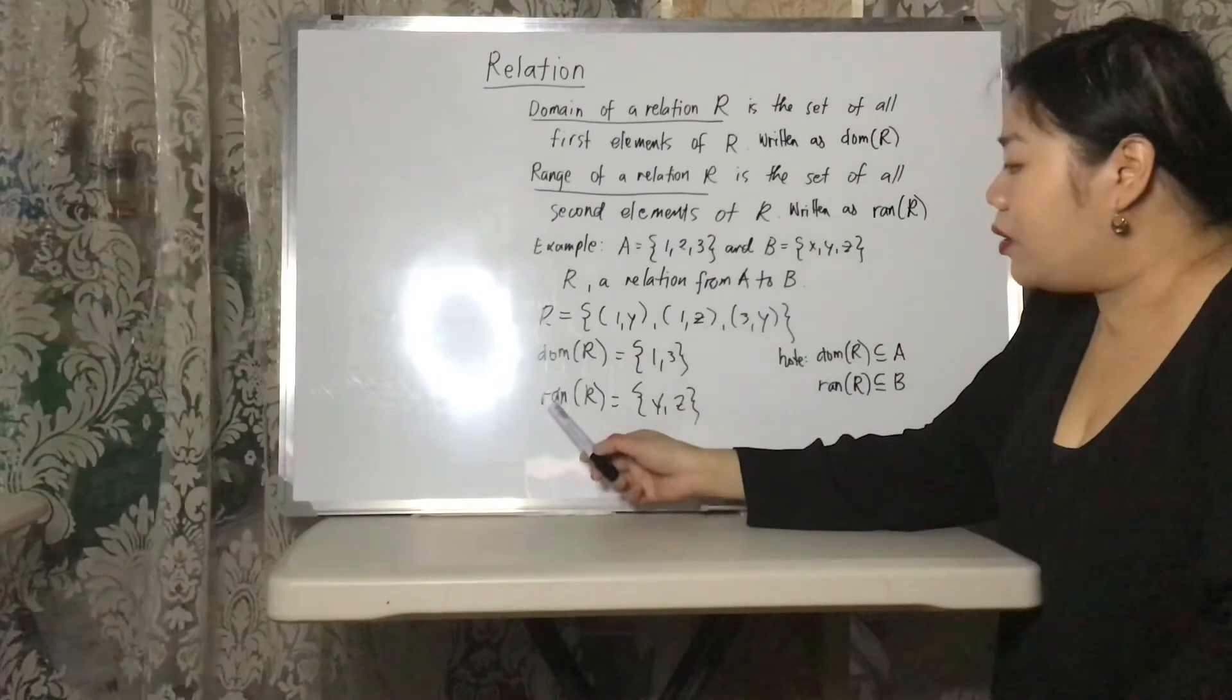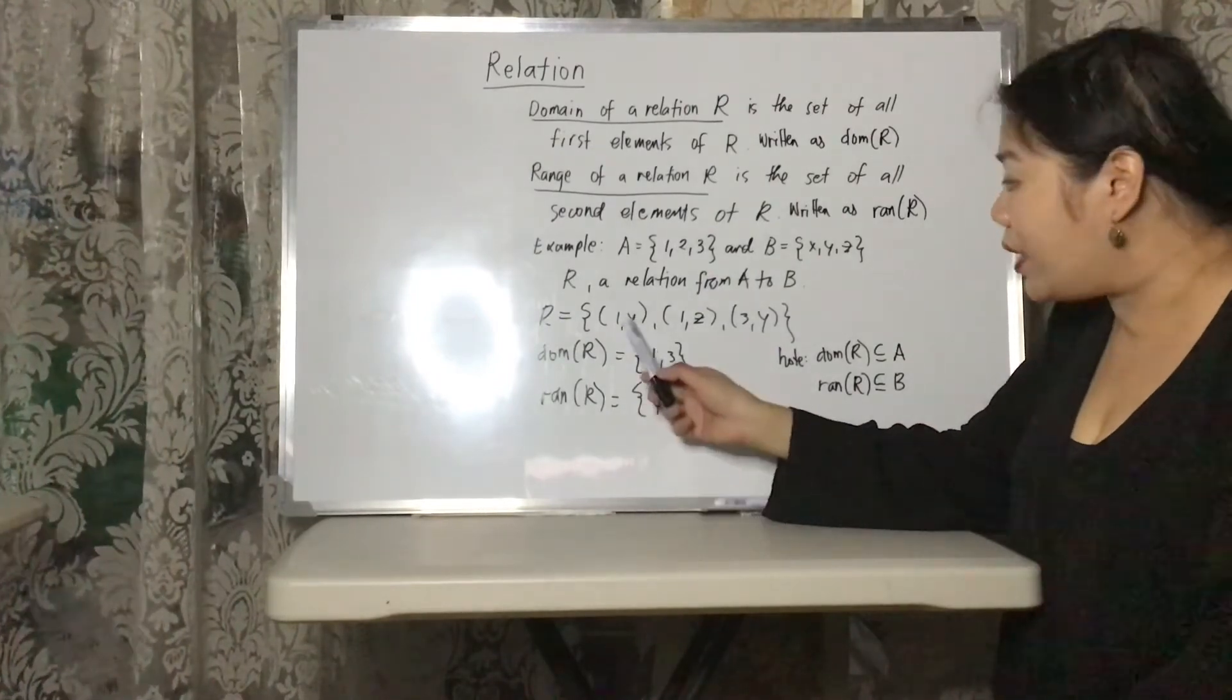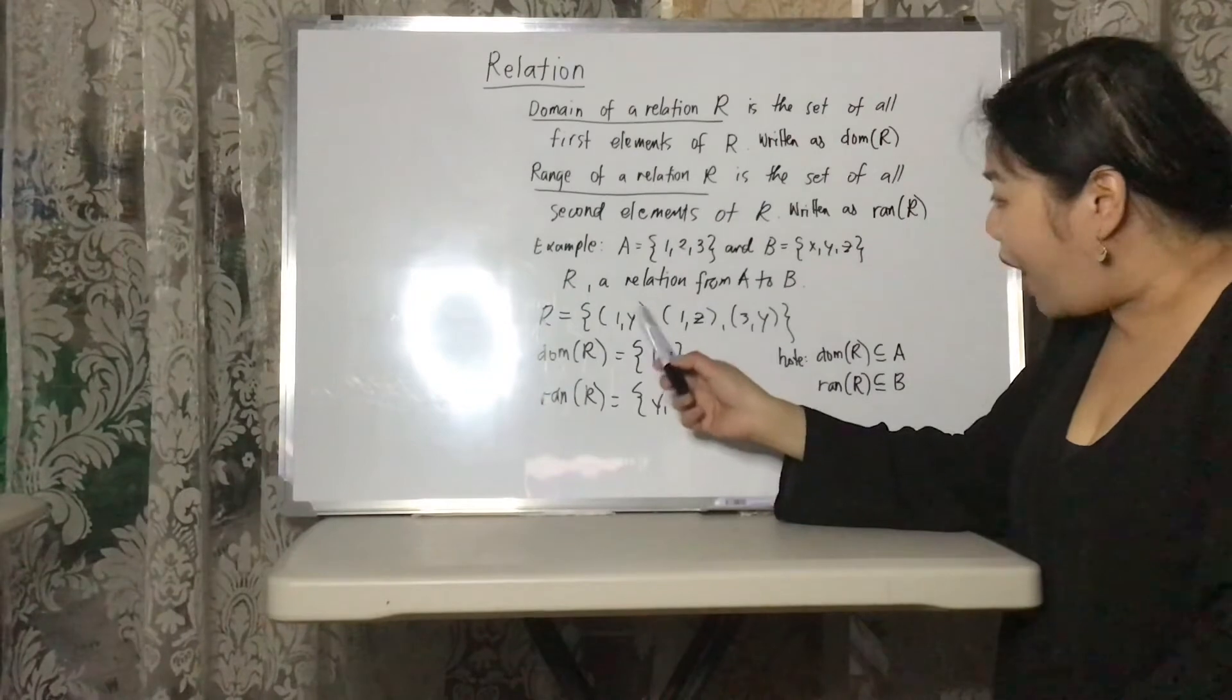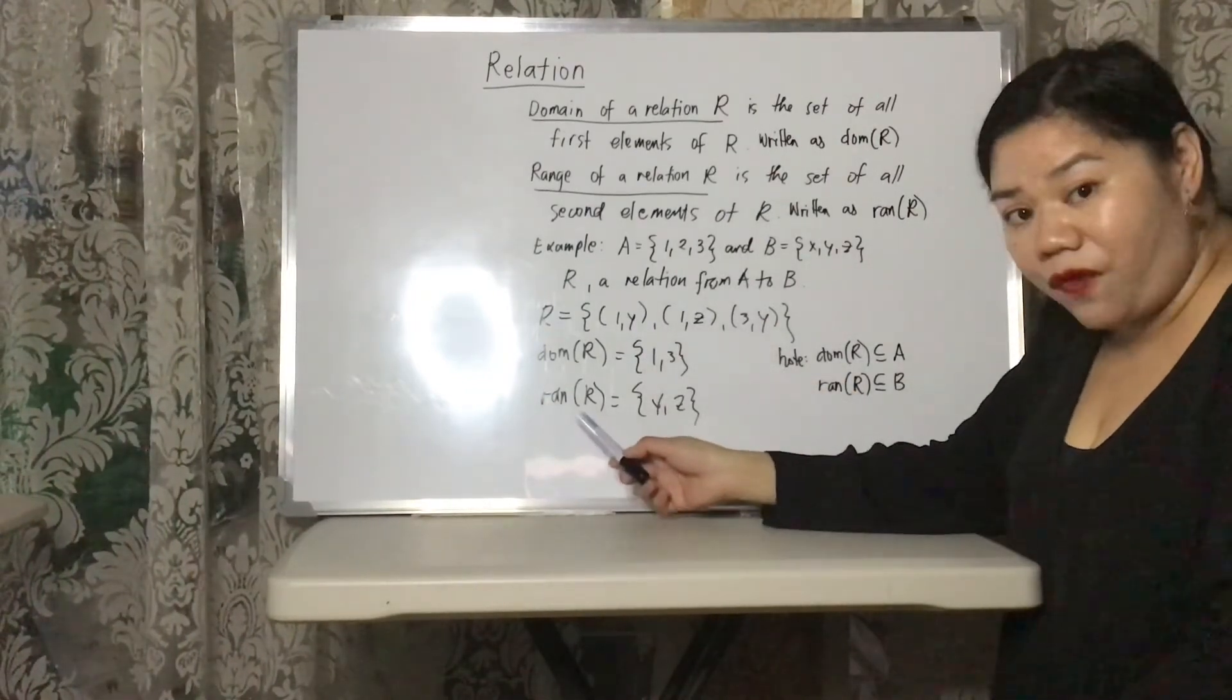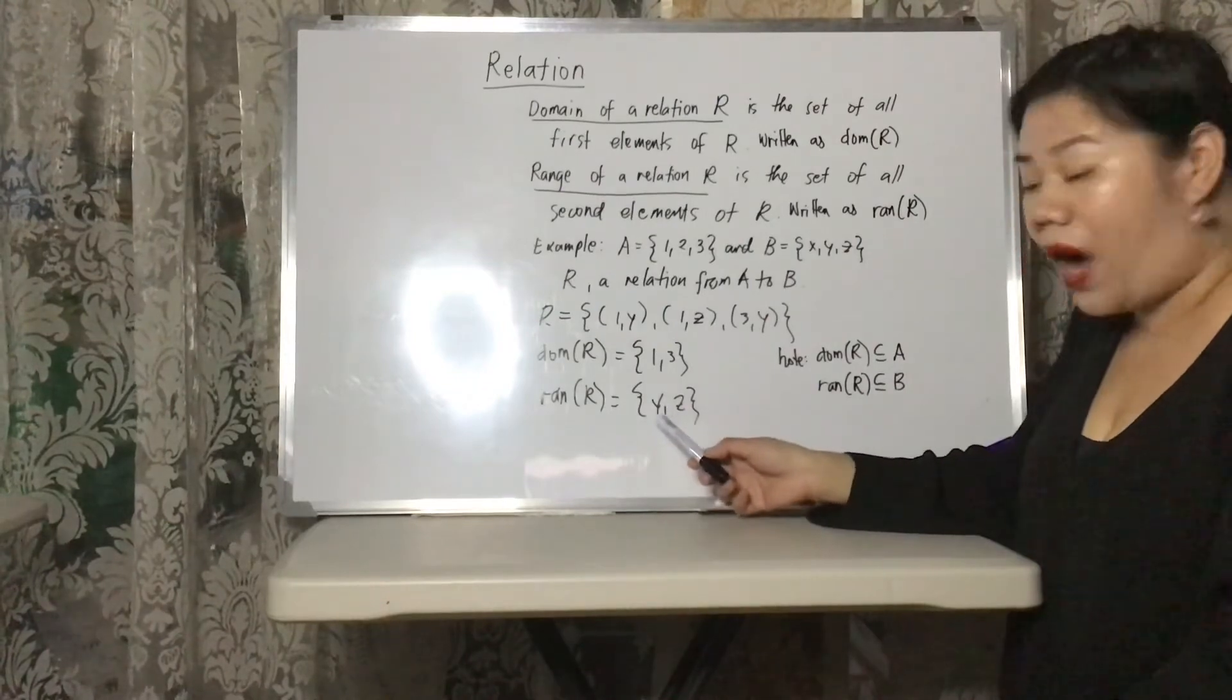and then we look at the range of R, we look at the second elements here. So, what do we have? We have Y, we have Z, we have Y. So, the range of R is the set Y, Z.